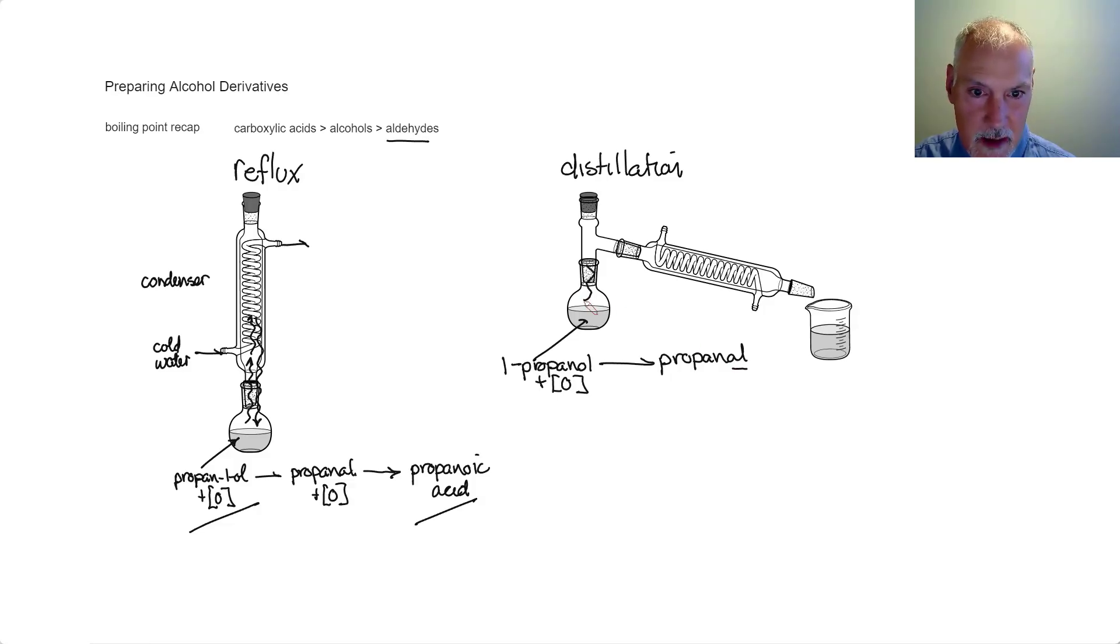And it begins its journey up here, but now heads down this way, where it encounters the condenser with the cold water flowing through it. It then condenses, but because of gravity, now flows down over here. So I now have isolated my propanal. There is no oxidizing agent present in this container. It has remained behind here in this beaker. As a result, I've been able to separate and stop the process.